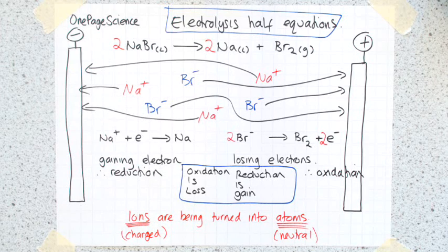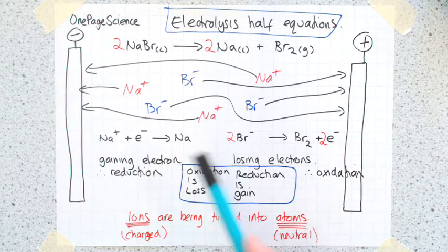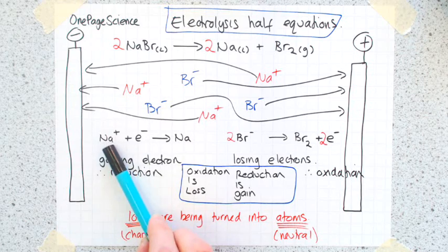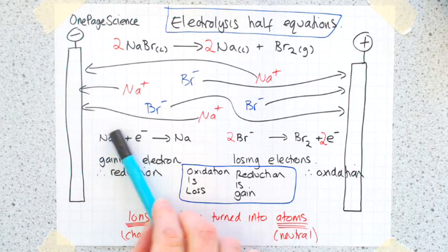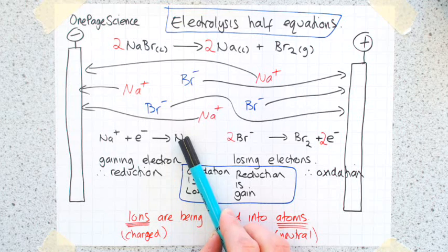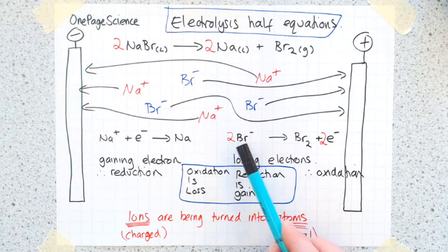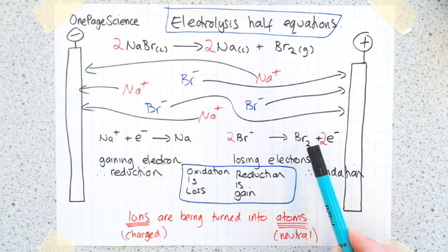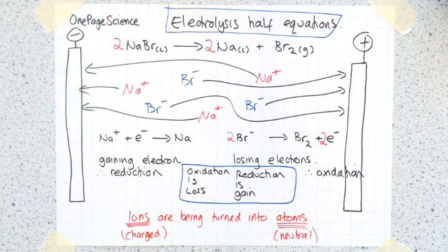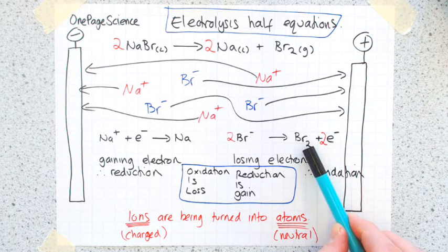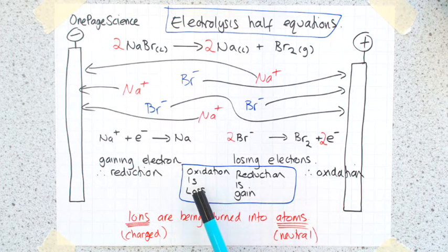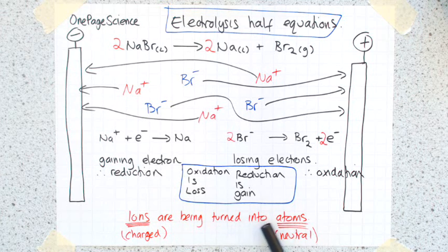So a brief intro there for you to electrolysis and how you write half equations. The positive ions gain electrons and become neutral atoms; negative ions lose electrons and become neutral atoms, or in this case, a neutral molecule. Oxidation is losing electrons, reduction is gaining electrons, and the bottom line here is that ions are being turned into atoms - charged things being turned into neutral things. That's electrolysis half equations.